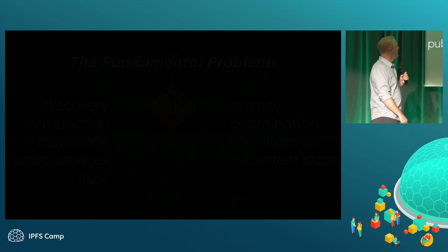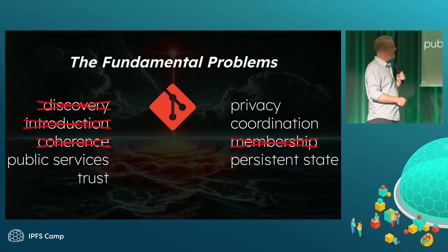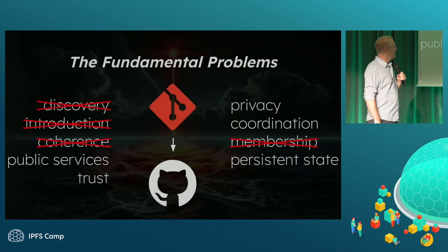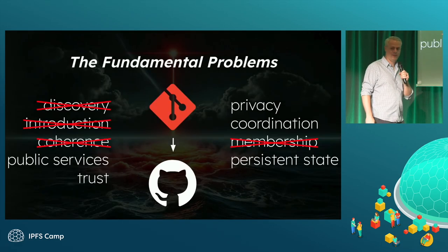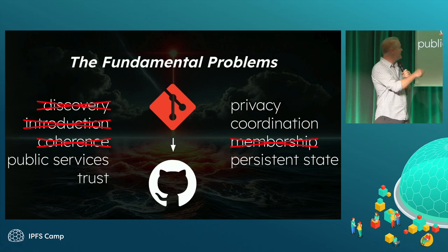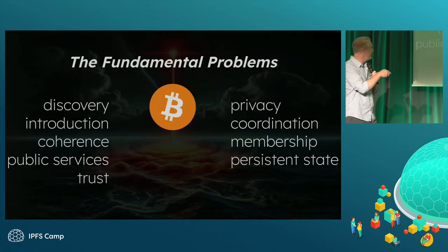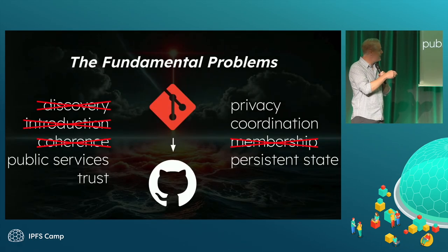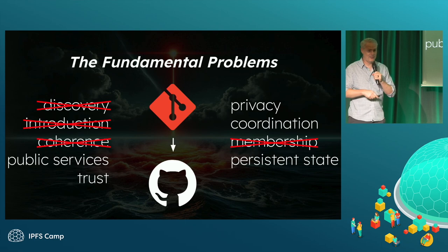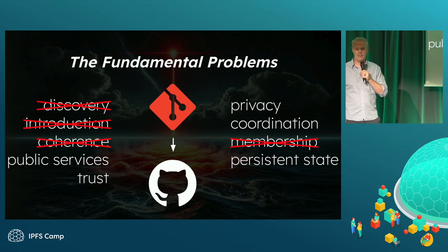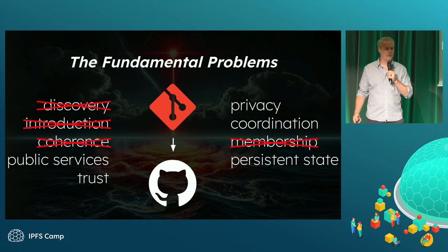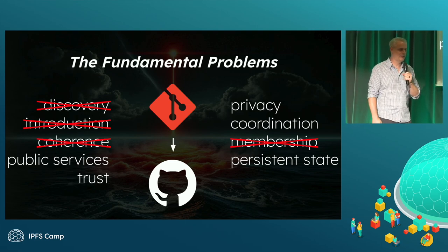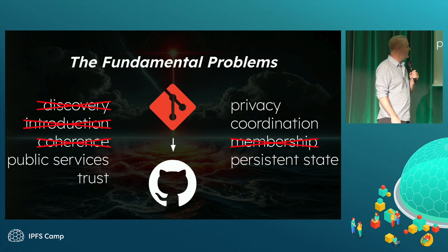With Git, they didn't solve these problems. That made GitHub inevitable, because this is exactly what GitHub does. And how much did GitHub sell to Microsoft for? Billions of dollars.